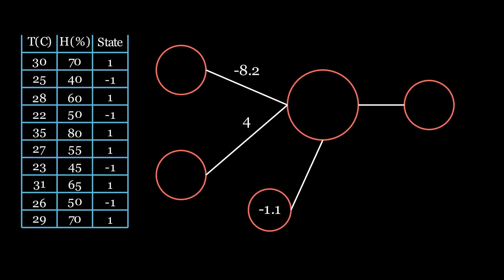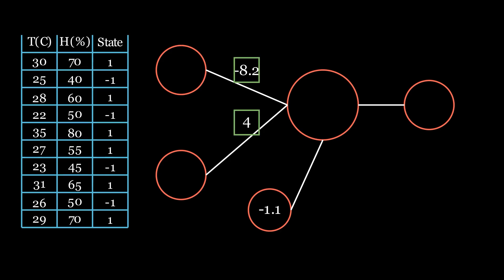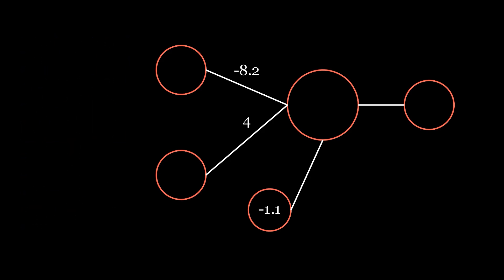As you can see, the correct weights are minus 8.2 and 4, and our bias is minus 1.1. So now that our model is working, we need to test it on data that it hasn't seen before. So let's start with quite a hot day: 30 degrees Celsius and 70% humidity.